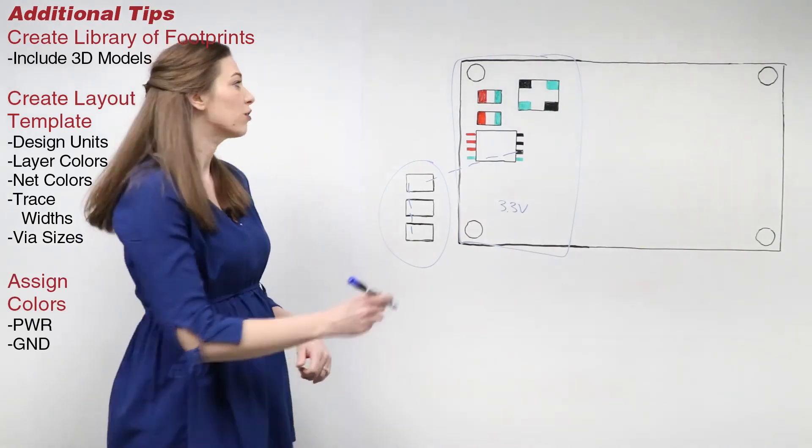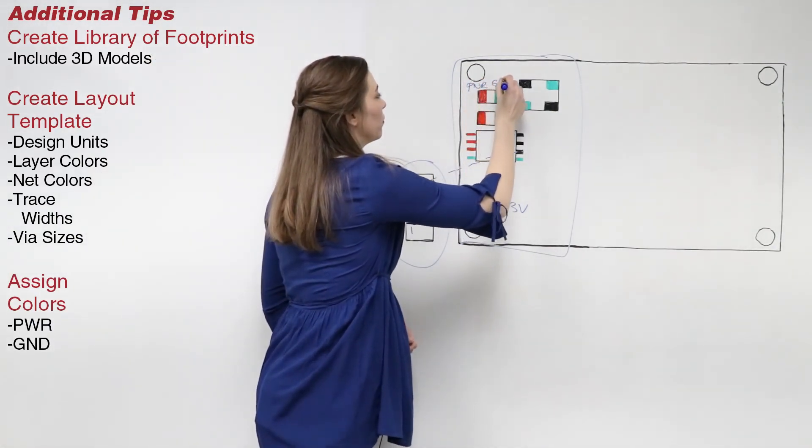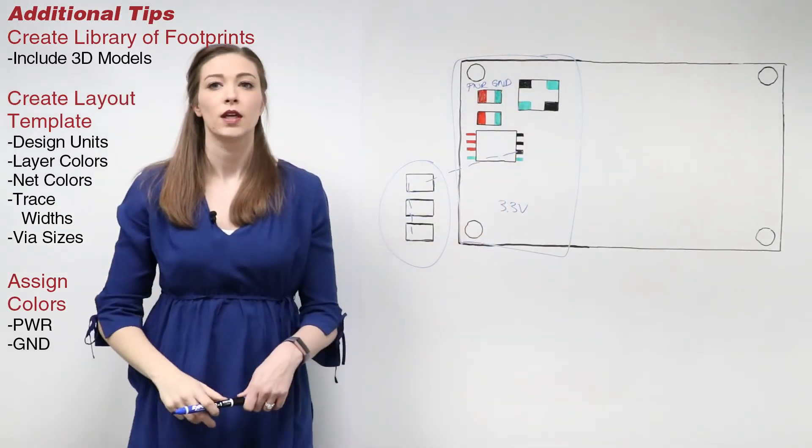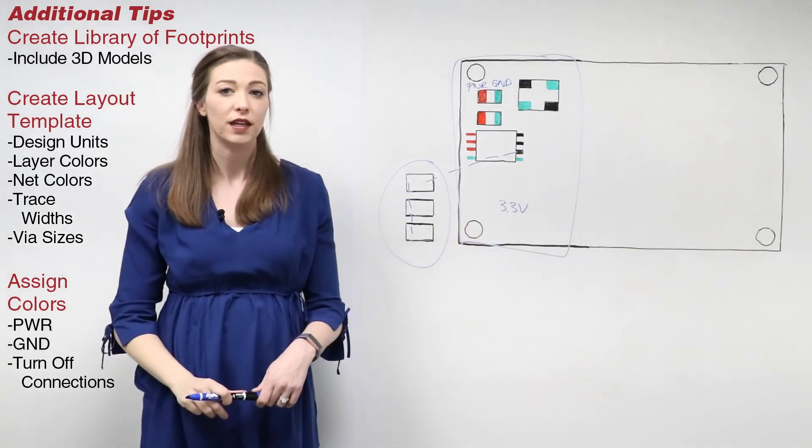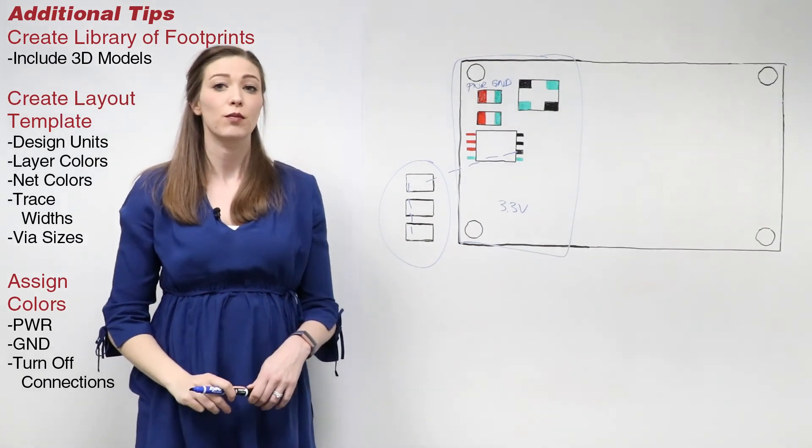Assign different colors to power and ground nets and turn off the connections for these pins. This will reduce the number of connections and allow you to see the circuit more clearly.